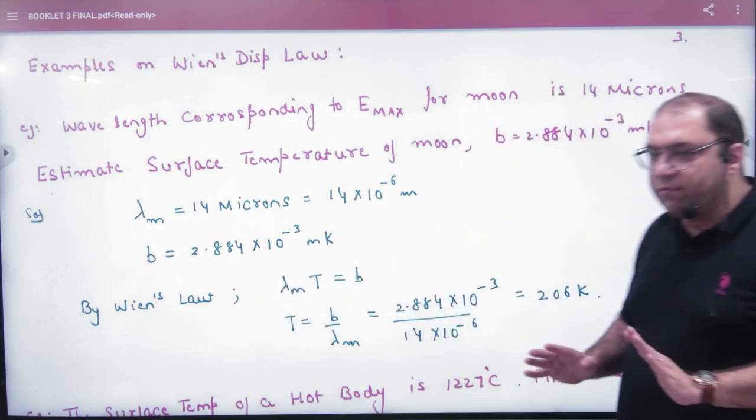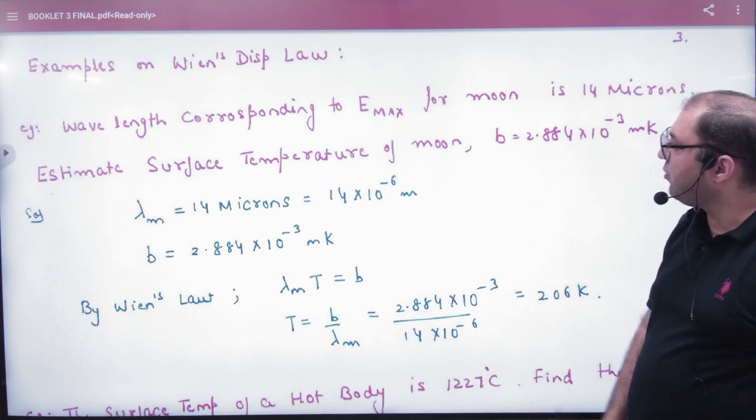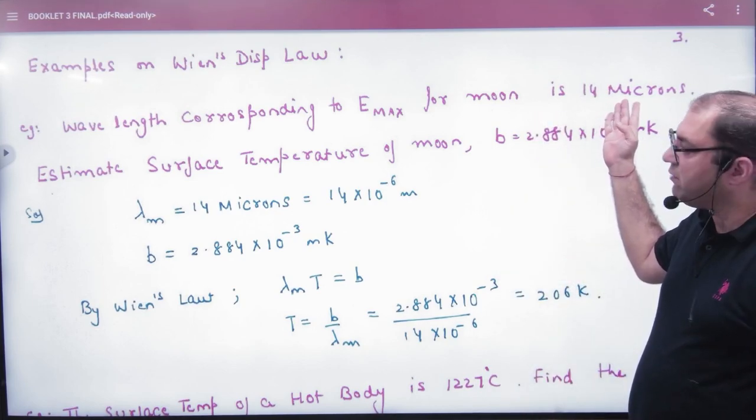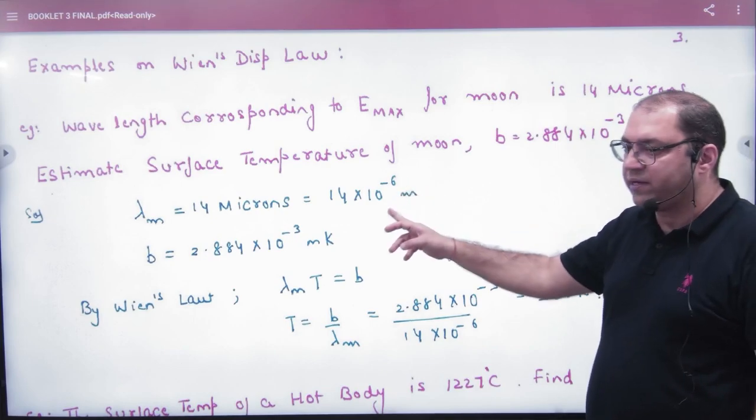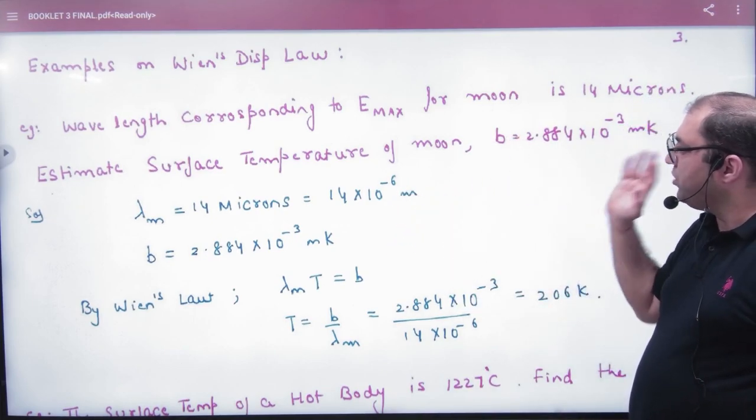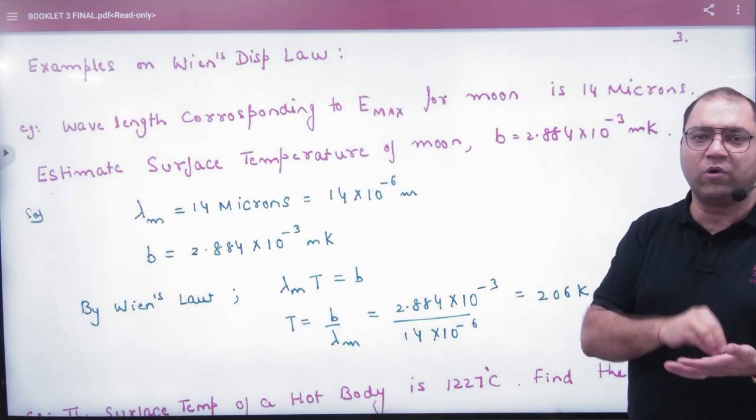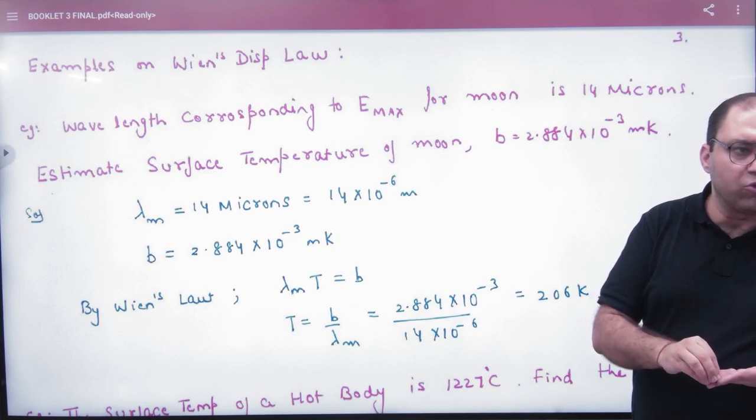So the energy is coming out and its spectrum will become like this. When the light of its maximum energy will be correspondingly, what was the value of lambda? 40 micron. Micron means 10 to the power minus 6. What will be the surface temperature of the moon? B's value you know. When you are giving lambda and asking temperature, the law is one.